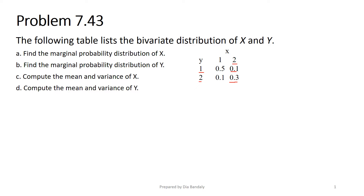The first part asks us to find the marginal probability of x. Remember, since x is given in the columns, to find the marginal probability of x all we have to do is sum the columns. Now I'm able to write the probability distribution of x. X can be either 1 or 2. The probability that x is 1 is 0.6, and the probability that x is 2 is 0.4.